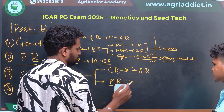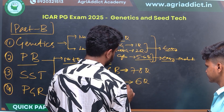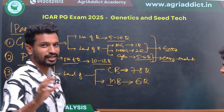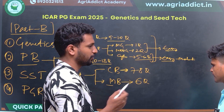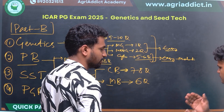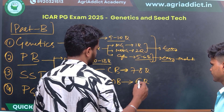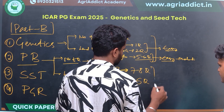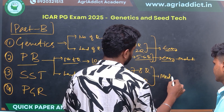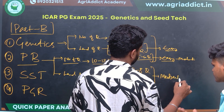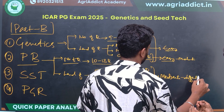From Molecular Breeding, approximately 6 questions came. The level of questions for both Conventional and Molecular Breeding was moderate to difficult — one or two questions were easy, but the rest were moderate to difficult, with some confusing options.